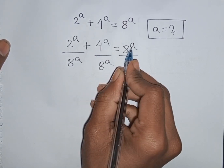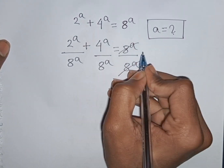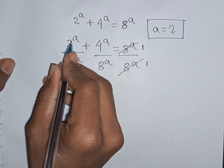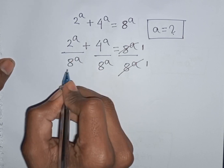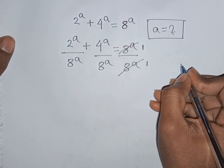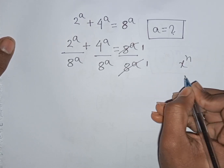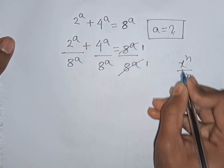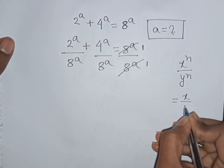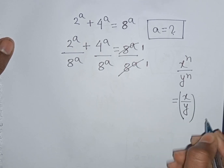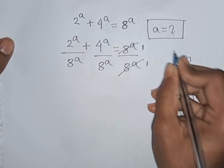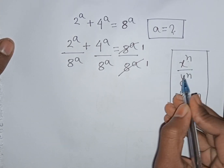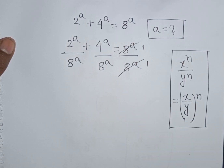Now we see this 8 power A and this 8 power A will be cancelled. Now from here we see A, A — same power but different base. So remember this exponential rule: x power n times y power n is equal to x times y, then bracket, common power n.